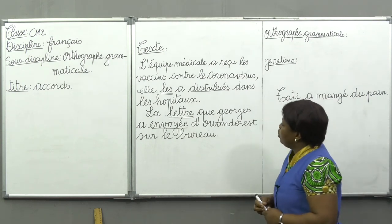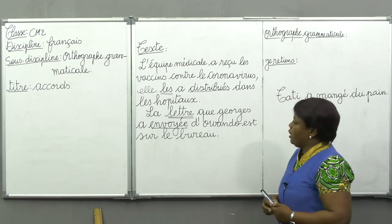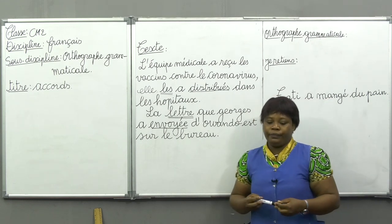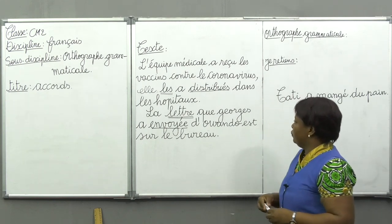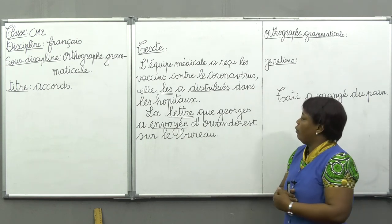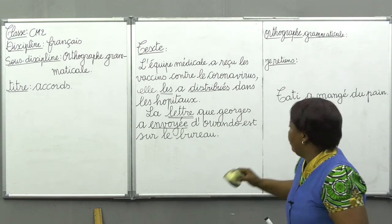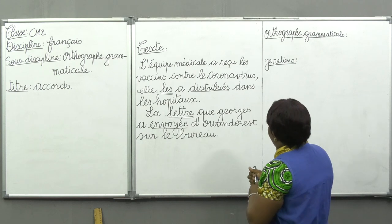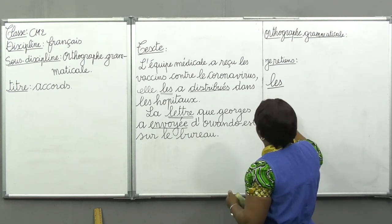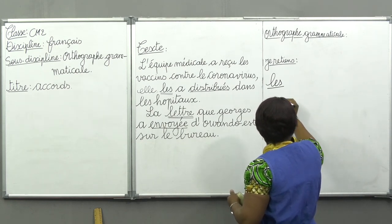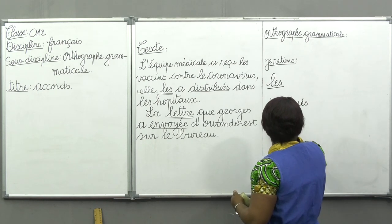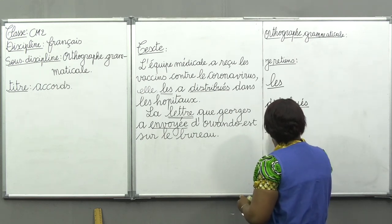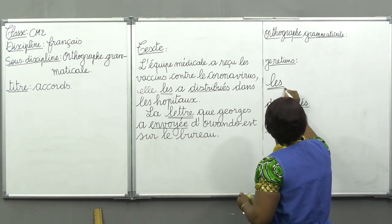Suivez au tableau. Nous avons souligné les mots. Il y a des mots soulignés en deux traits. Il y a aussi des mots soulignés en un trait. Observez ces mots. Nous avons souligné le mot « les » en deux traits, et « distribués » en un trait.